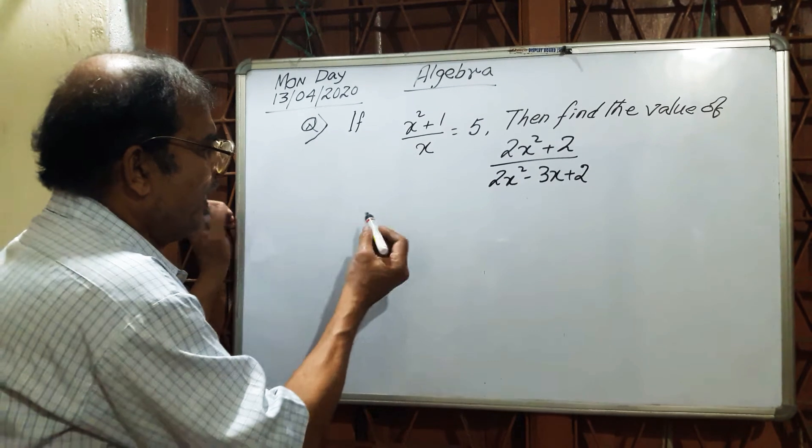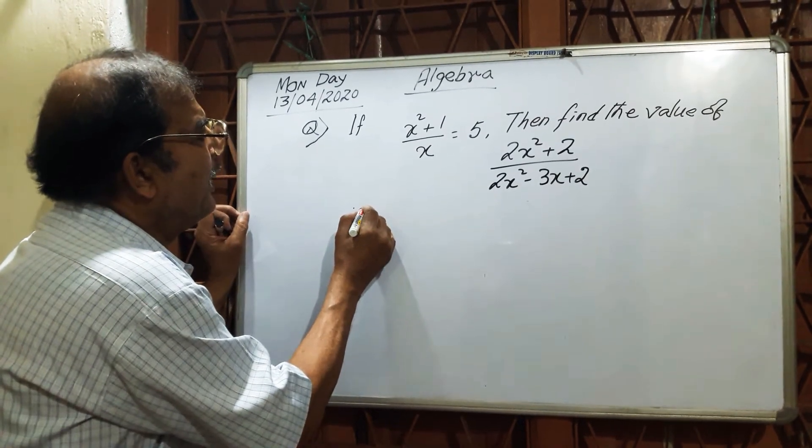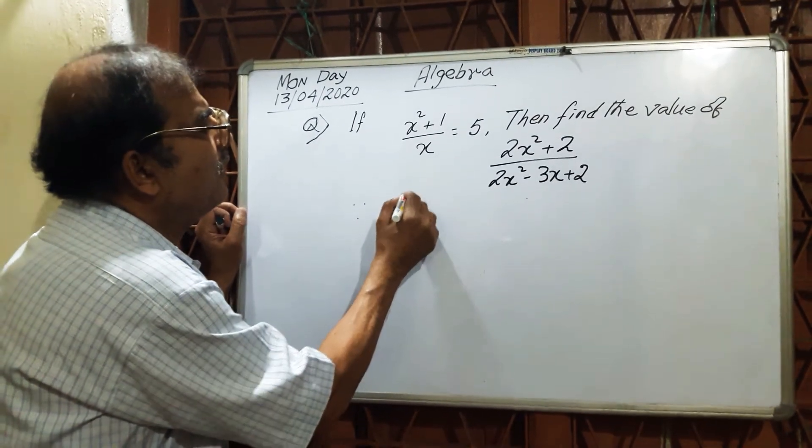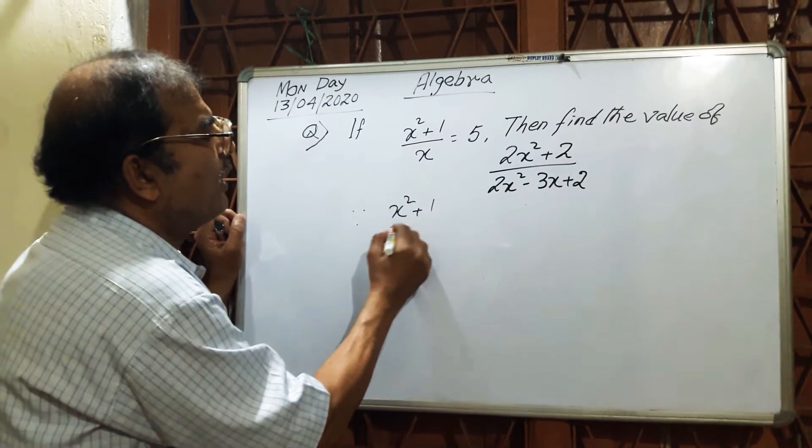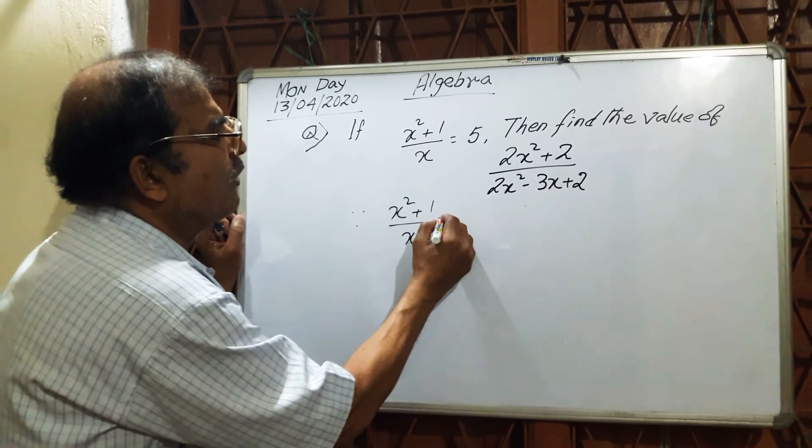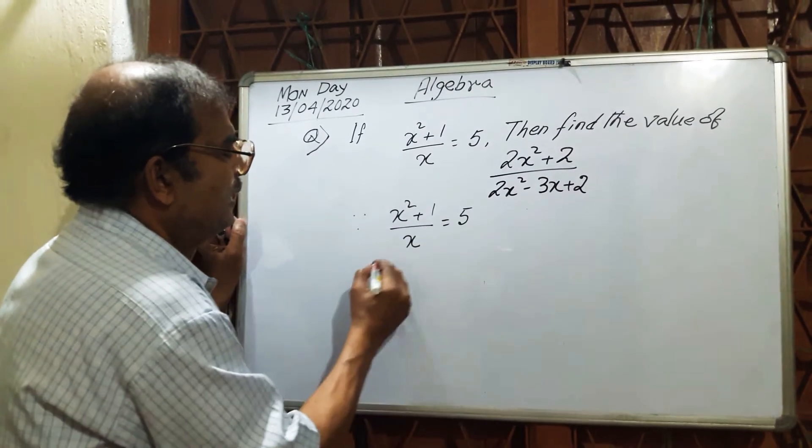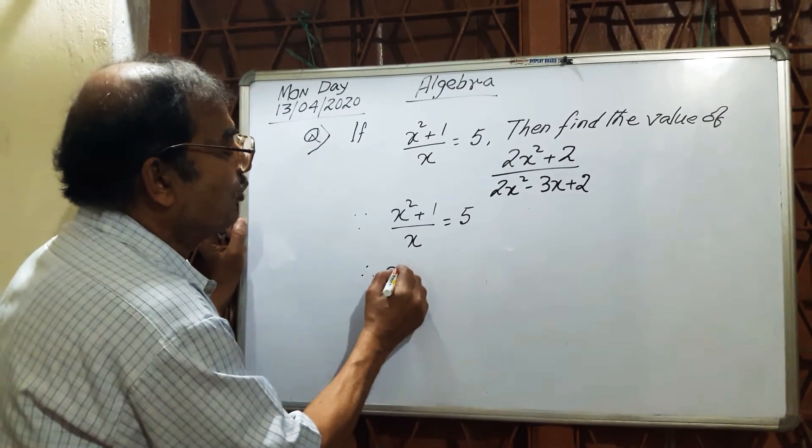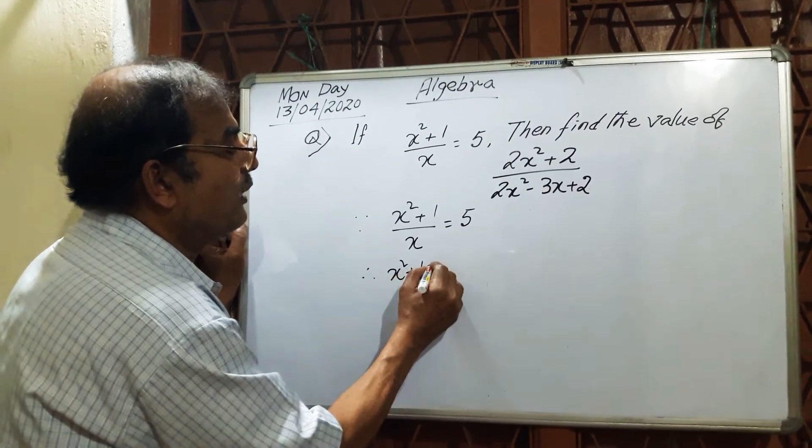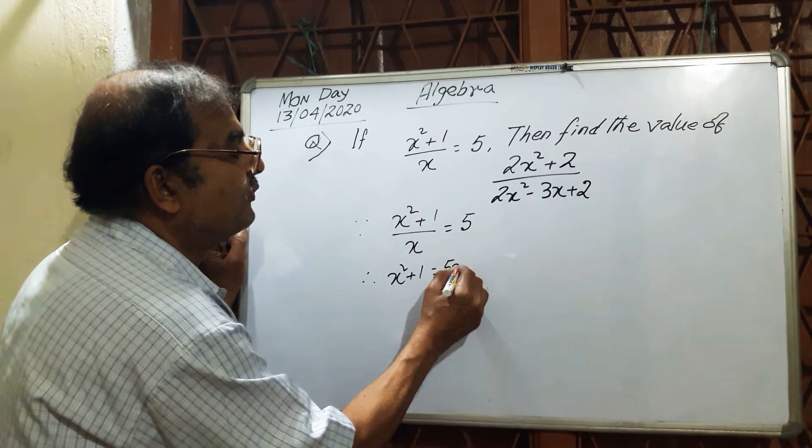When given x² + 1/x = 5, then x² + 1 = 5x.